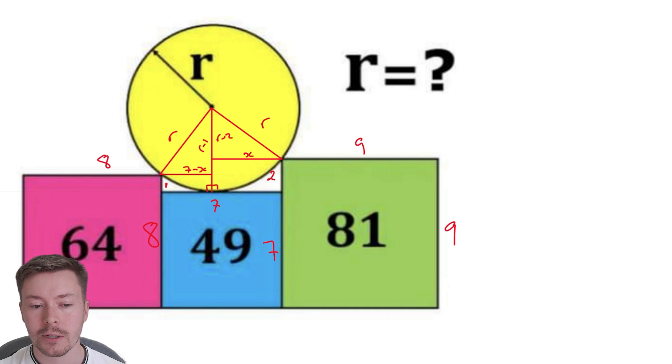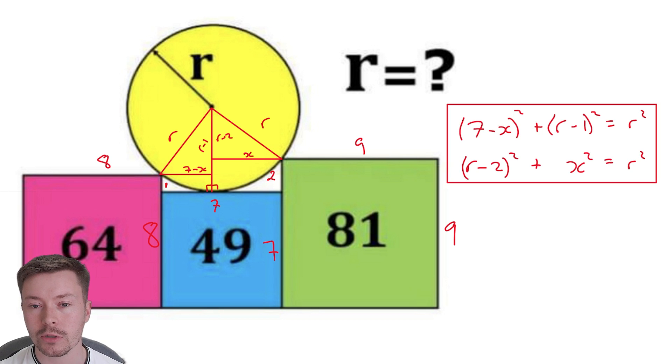Now actually we will get that because we've got two right-angled triangles. And so what we can do is we can use Pythagoras and get these two equations here. So that's 7 minus x all squared plus r minus 1 all squared equals r squared. And r minus 2 all squared plus x squared equals r squared.